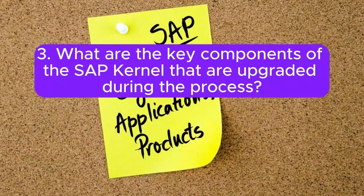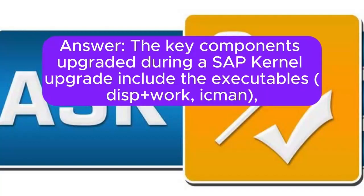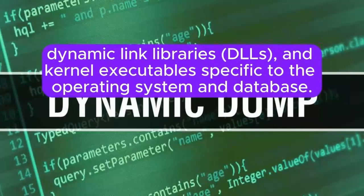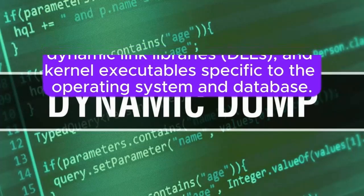3. What are the key components of the SAP kernel that are upgraded during the process? The key components upgraded during a SAP kernel upgrade include the executables disp+work, ICMAN, dynamic link libraries (DLLs), and kernel executables specific to the operating system and database.